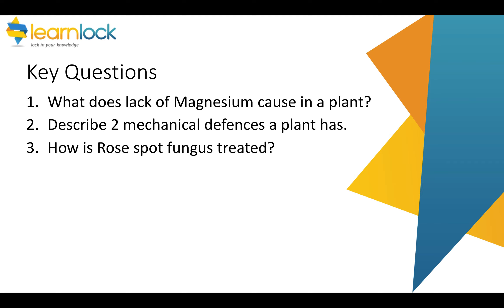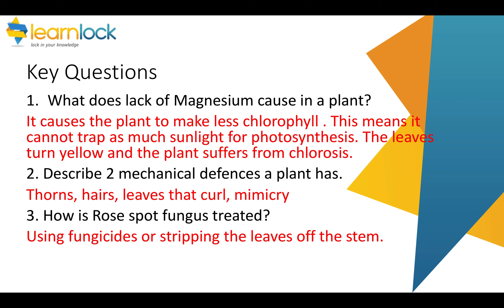Key questions — pause the slide now and take five to ten minutes to answer these. What does lack of magnesium cause? Lack of magnesium means a plant won't make as much chlorophyll, so it can't photosynthesise as well, the leaves will turn yellow, and it suffers from chlorosis. For mechanical defences, any two of the following: thorns or hairs, leaves that curl up when touched, or mimicry. How is rose black spot fungus treated? It can be treated with a fungicide that kills the fungus, then stripping all the leaves off from the stem to prevent the infection spreading.